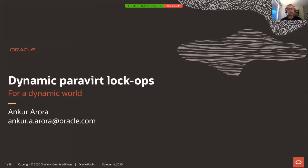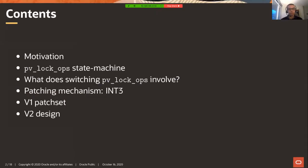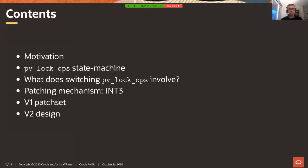I'm Ankur, and today I'll be talking about dynamic ParaVirt lockops. I'll start off talking about the motivation for this feature, then the state machine for Q-spin locks, what switching PV lockops involves - mostly the requirements and safety needs - then the breakpoint-based patching mechanism, the design and implementation of V1, and then the design of V2 for this feature.